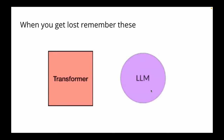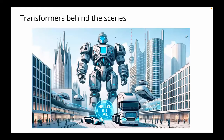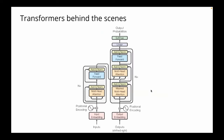If you get lost in this workshop, just remember two things. The red square is the transformer — it refers to the architecture. The round one is the LLM, which is the refined version of a transformer that has been fed a lot of data. Many people often confuse transformers with Optimus Prime, but that's not the case. Let's see what this transformer language model actually is behind the scenes — even Apple is doing on-device processing with it.